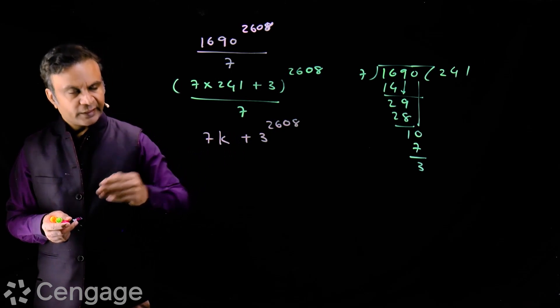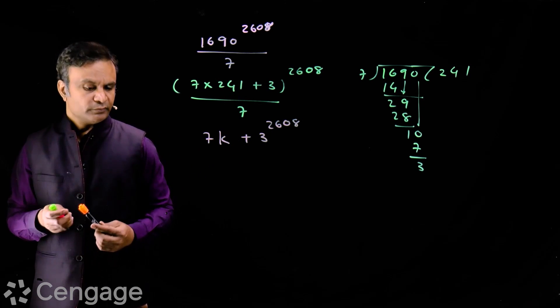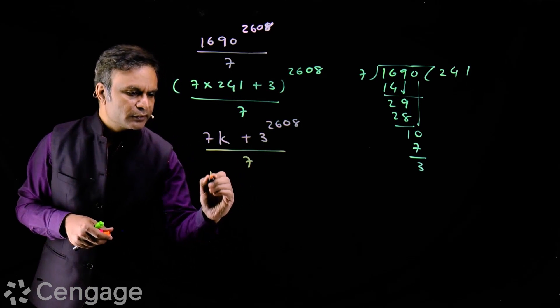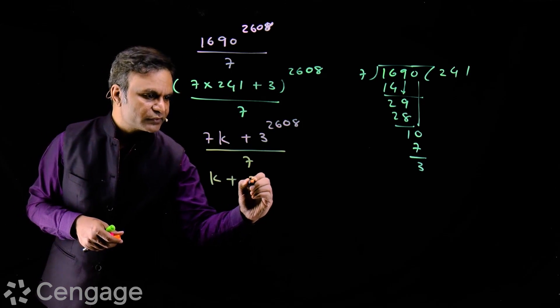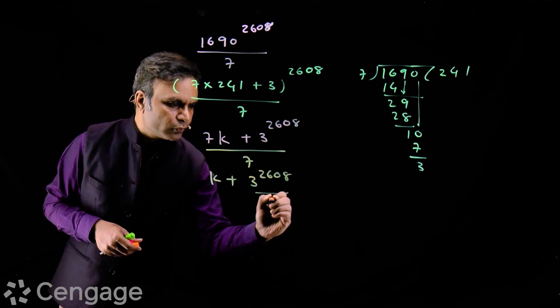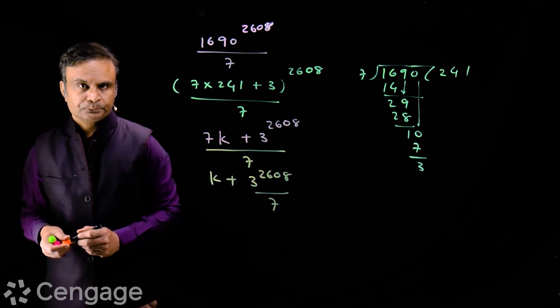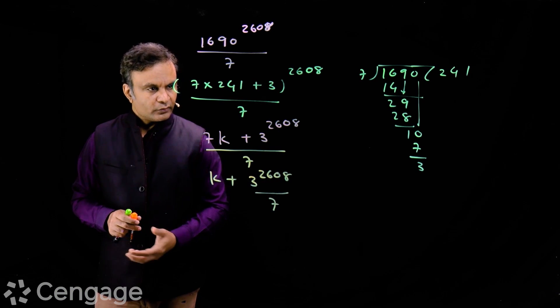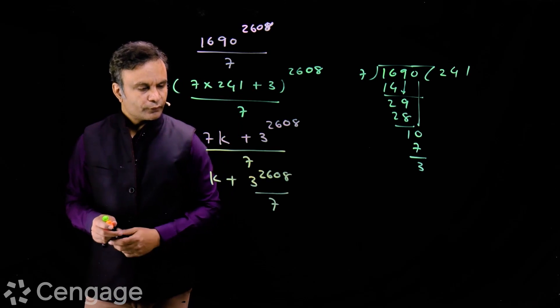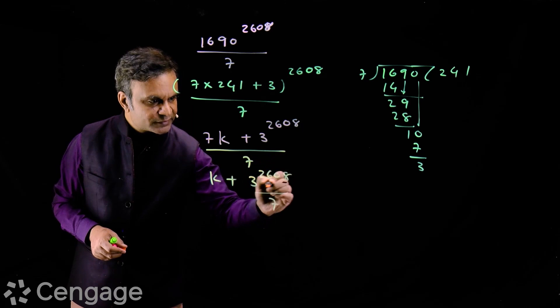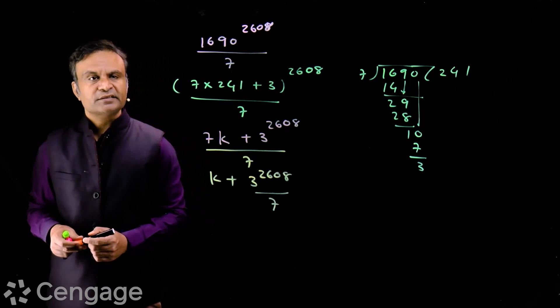Yes, the terms before the last term are multiples of 7. So we have this divided by 7. So we have integer k plus 3 power 2608 upon 7. Now this question reduces to find the remainder when 3 power 2608 is divided by 7.